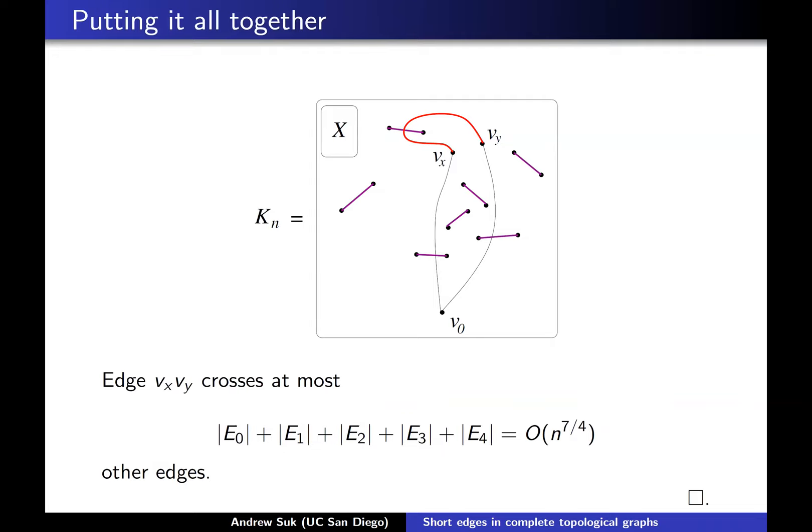So we just count it out. Since each possible category of edges that crosses the red edge is on the order of n^(7/4), that red edge with that minimality property is the special edge that crosses very few other edges.